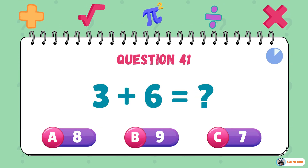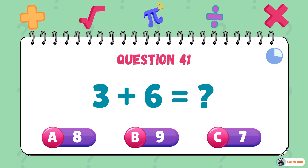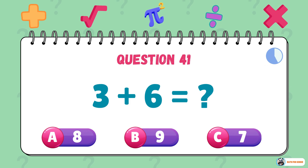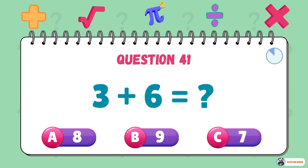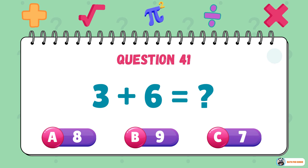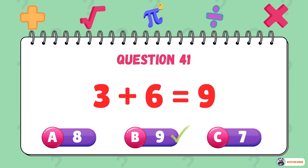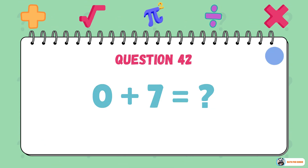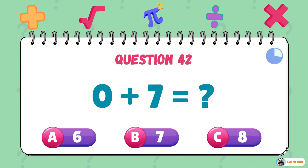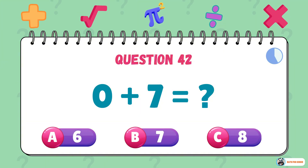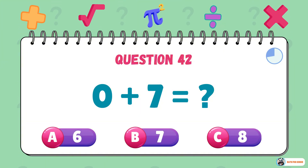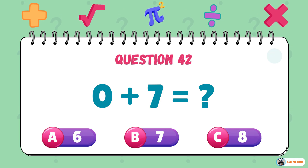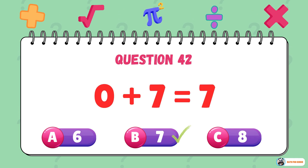What is 3 plus 6? The answer is 9. What is 0 plus 7? The answer is 7.